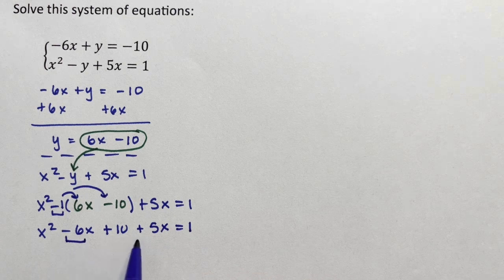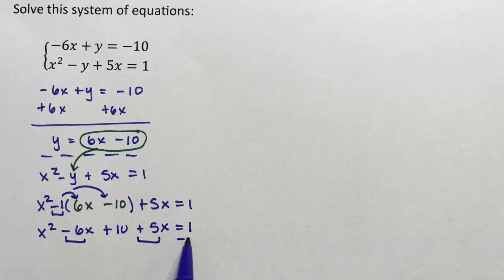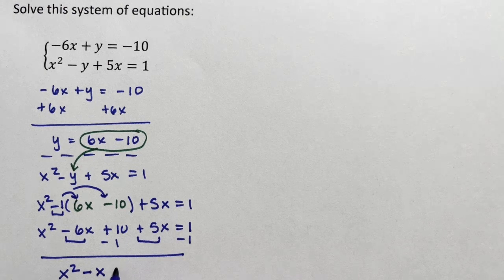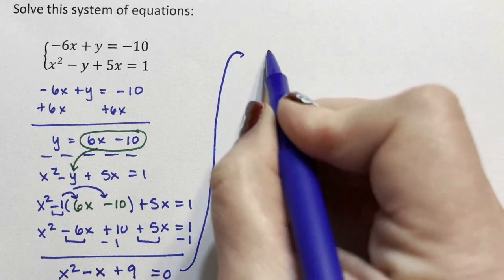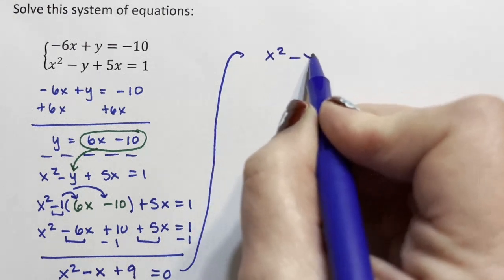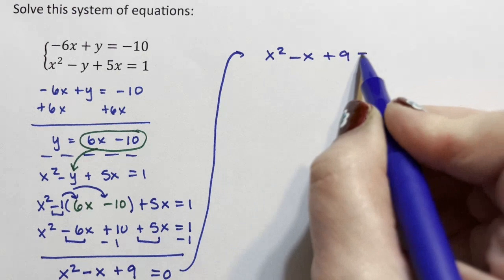I have two like terms, and I want to subtract the 1 over. So I have x squared, negative 6 plus 5 is a negative 1x, and 10 minus 1 is plus 9. Alright, I'm going to bring this all up here so I can work with it more easily. x squared minus x plus 9 equals 0.